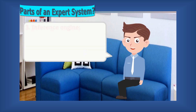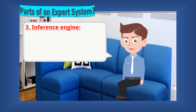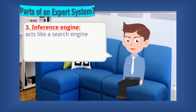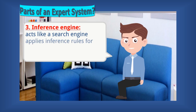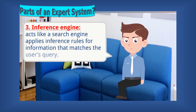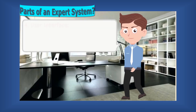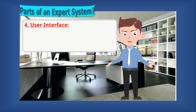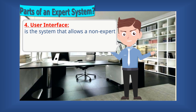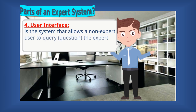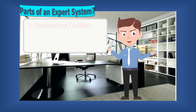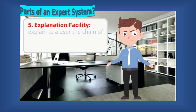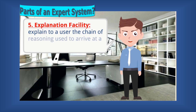Next, an inference engine, which acts like a search engine that applies inference rules in examining the knowledge base for information that matches the user's query. It attempts to derive answers from the knowledge base using a form of reasoning. Next, the user interface is the system that allows a non-expert user to query or question the expert system and to receive advice. The user interface is designed to be as simple to use as possible. The inference engine may also include abilities for explanation, so that it can explain to a user the chain of reasoning used to arrive at a particular conclusion by tracing back over the firing of rules that resulted in the assertion.